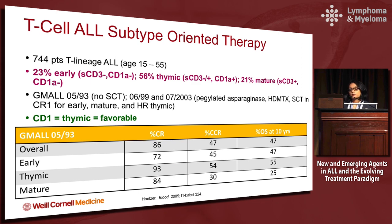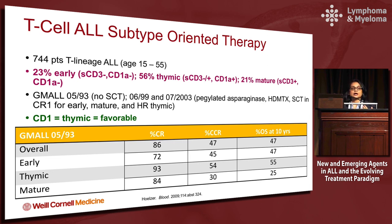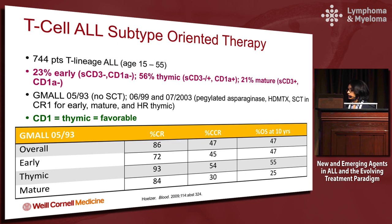T-cell ALL is not treated dramatically differently from B-cell ALL. The same strategies apply: young patients receive pediatric-inspired regimens and older patients receive multimodality treatment, with the exception that patients with large thymic masses receive radiation after completion of chemotherapy. Long-term responses are similar, except for the thymic subtype which has a very favorable outcome.